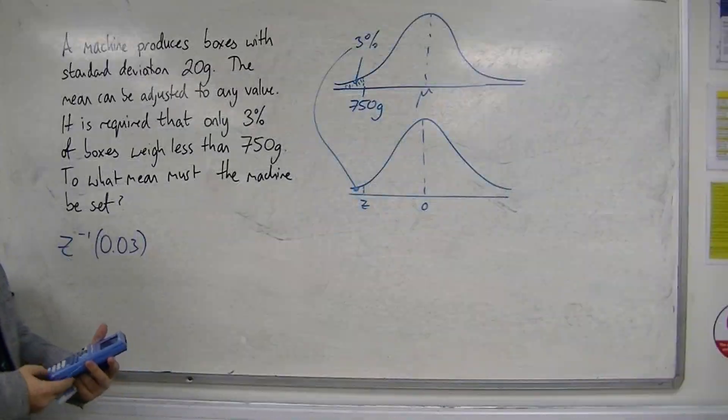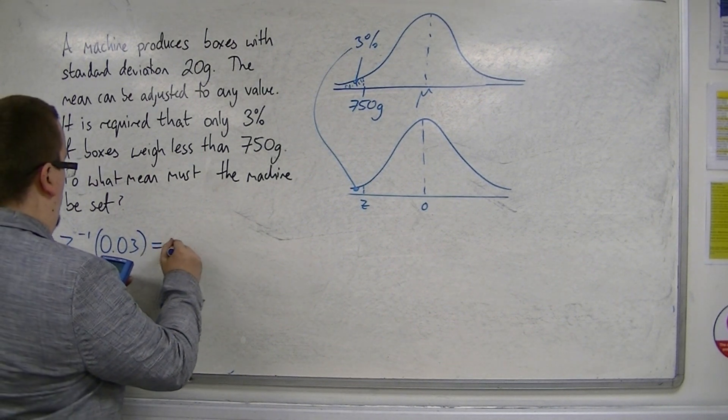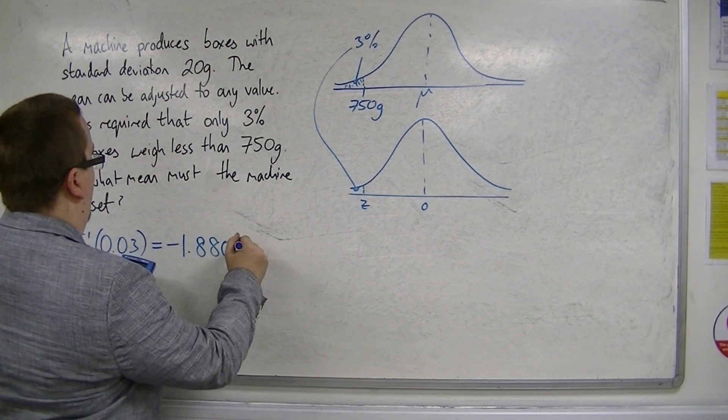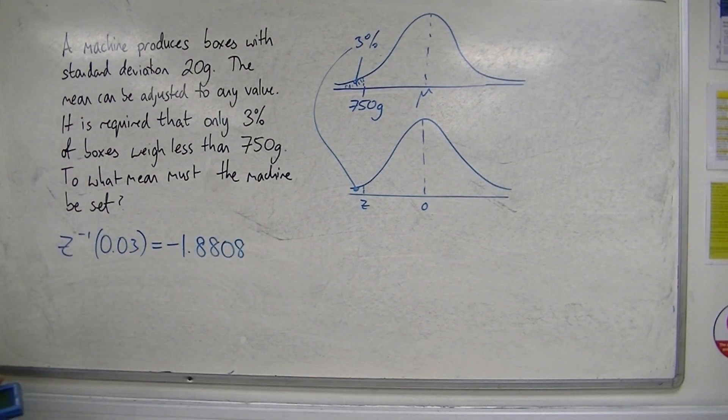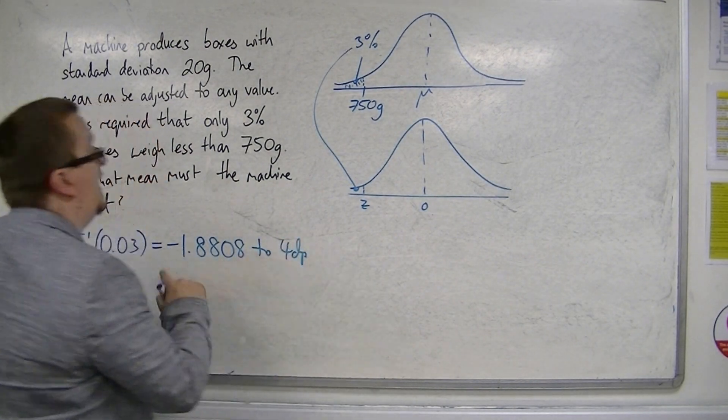We calculated the inverse norm of 0.03 to be minus 1.8808 to 4 decimal places. That's the value of z here.